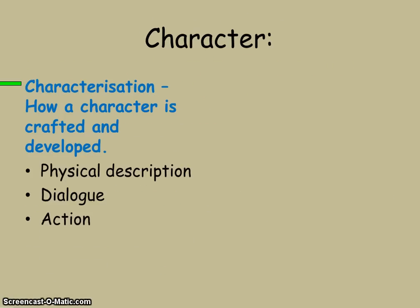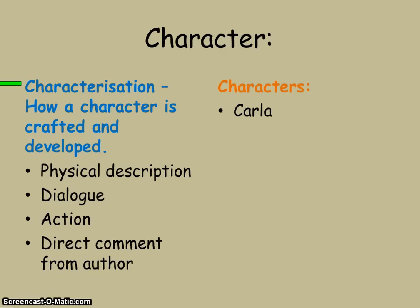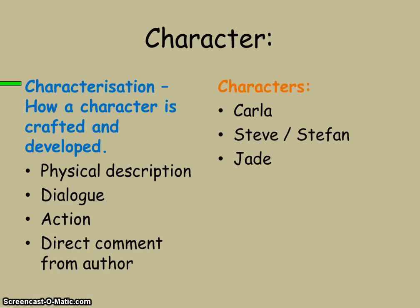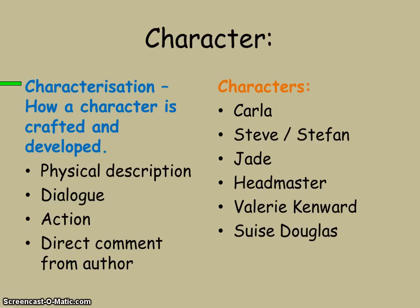On character — remember you must consider physical description, dialogue, action, and direct comments. There are lots of named characters in this story: Carla the dinner lady, Steve or Stefan, Jade who is Carla's daughter, the headmaster, and then two characters — Valerie Kenwood and Susie Douglas — who have a conversation at the end of the story.